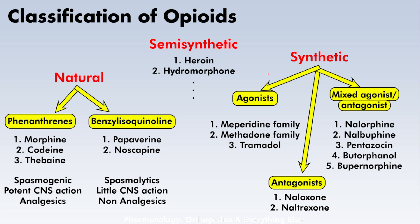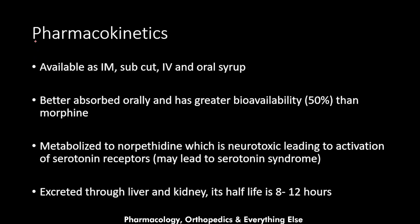Regarding where meperidine sits among opioids: opioids are classified as natural, semi-synthetic, and synthetic. All natural and semi-synthetic agents are agonists. Among synthetic opioids we have agonists, antagonists, and mixed agonist-antagonists. The agonist synthetic opioids include the meperidine family (also called the phenylpiperidine family), the methadone family, and the tramadol family. Meperidine is thus an agonist synthetic opioid analgesic.